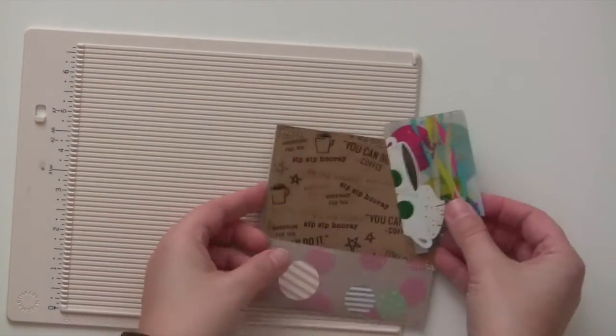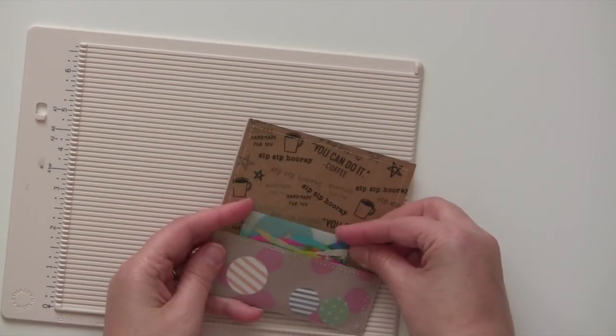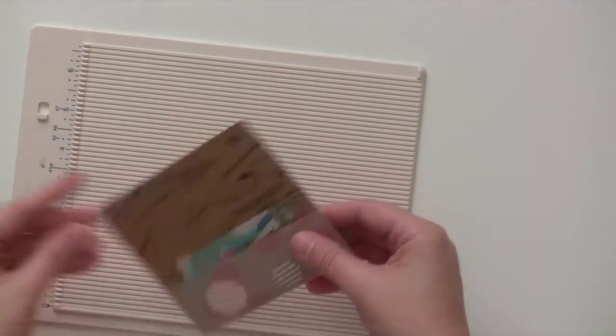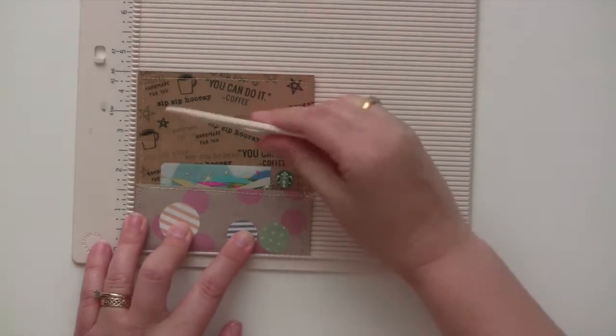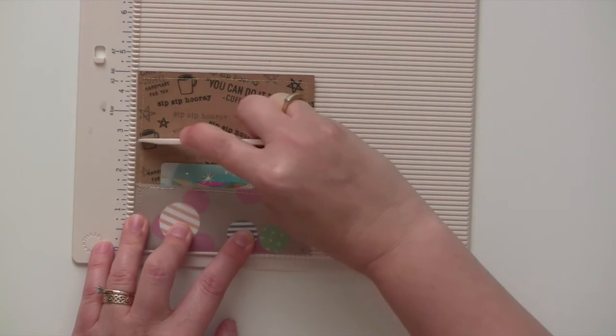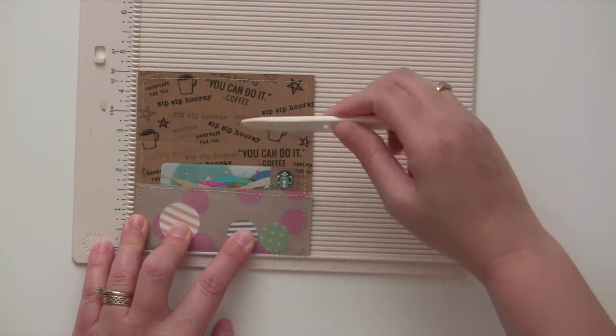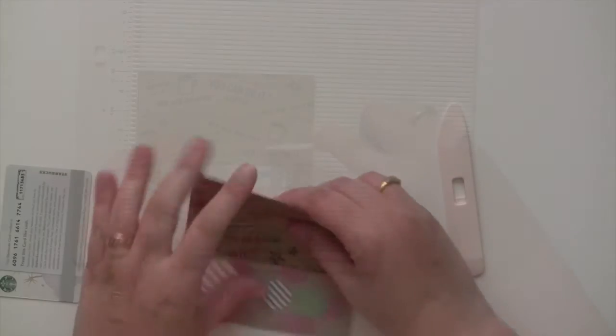Now we're going to score this to make the top flap. This is my little scoreboard. You don't have to use this, but the paper is really thick, so I thought this would be better to get a nice good crease.